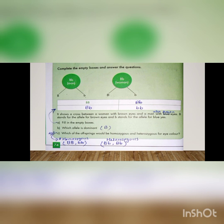Dominant allele capital B hai. Agar man mein dominant allele capital B hai, to statement ke mutabiq man ki eyes color bhi brown honi chahiye. Small b blue color ke liye responsible hai lekin woh dominant nahi hai, isliye statement mein brown likhna parega.